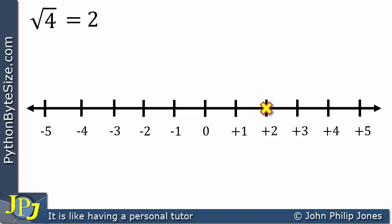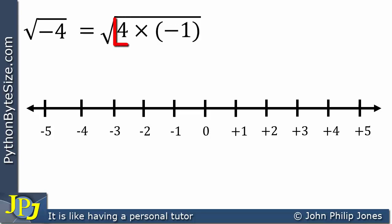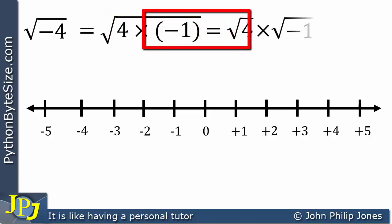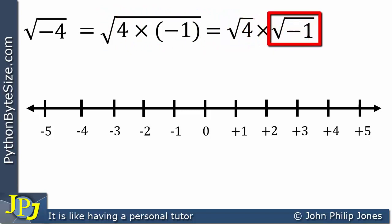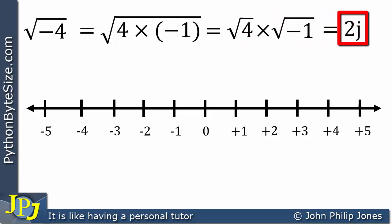Let's look at the square root of minus 4. A previous video showed that we can split this as the square root of 4 times minus 1, which further splits into the square root of 4 times the square root of minus 1. The square root of 4 is 2, and the square root of minus 1 we replace with j. So we can show that the square root of minus 4 is equal to 2j.